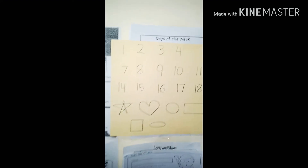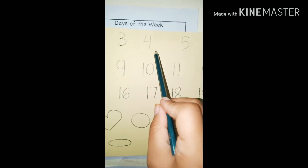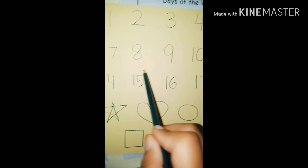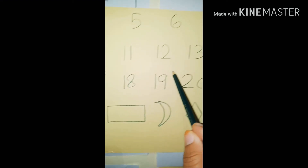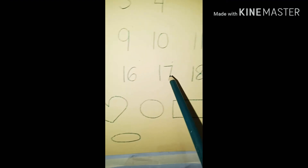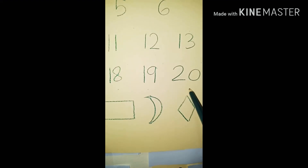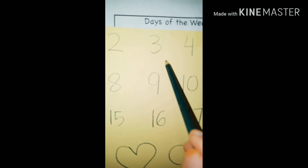Children, now let's count: one, two, three, four, five, six, seven, eight, nine, ten, eleven, twelve, thirteen, fourteen, fifteen, sixteen, seventeen, eighteen, nineteen, twenty. Good job! Now let's count again: one, two, three, four, five, six, seven, eight, nine, ten, eleven, twelve, thirteen, fourteen, fifteen, sixteen, seventeen, eighteen, nineteen, twenty.